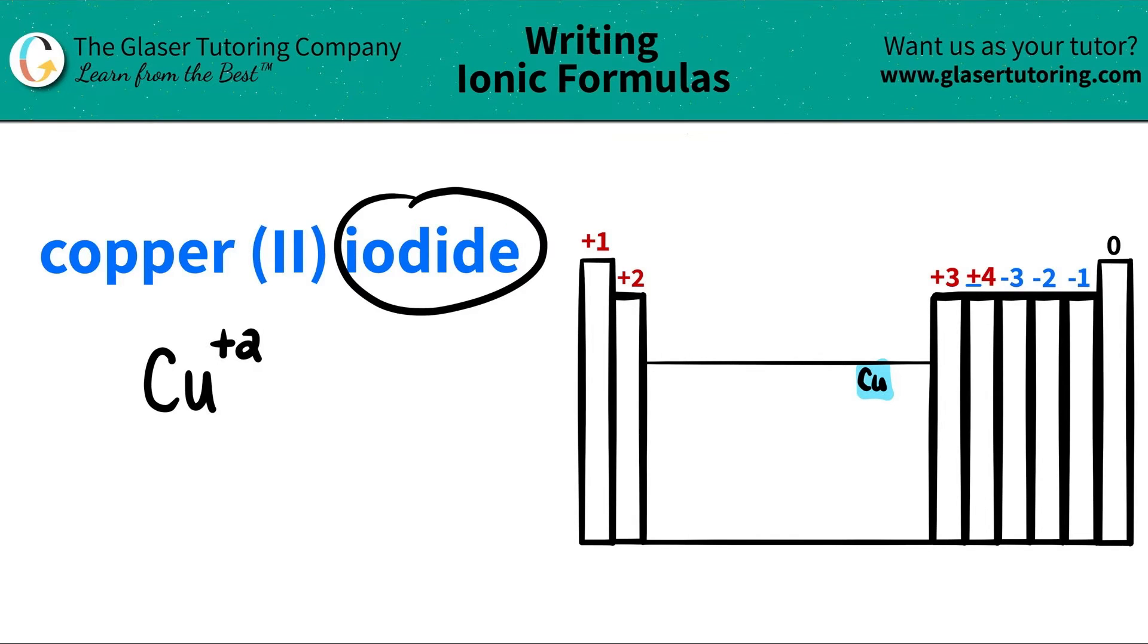The next element I see is iodide. It's an -ide ending, so I know it's going to be a non-metal. This came from iodine. Iodine turns into iodide when you're naming it, and if I scan the periodic table, iodine is all the way down here. It's represented by an I.